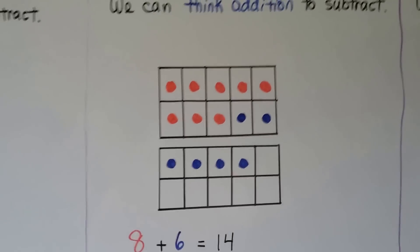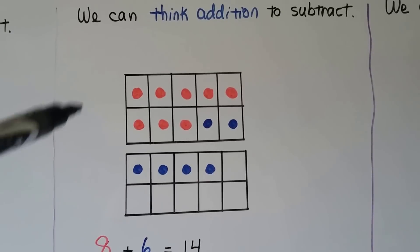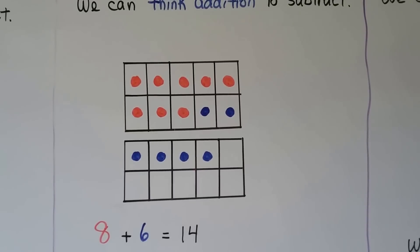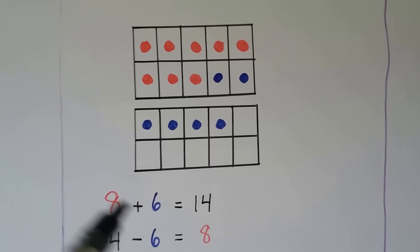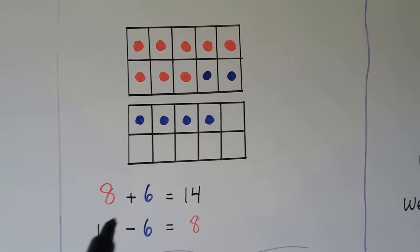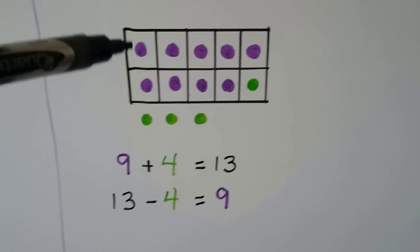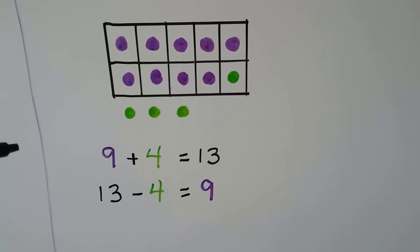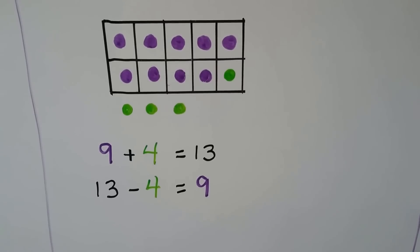And we can think addition to subtract. Here we have a 10 frame that's full — 10, eleven, twelve, thirteen, fourteen. We have 8 red counters and 6 blue counters, making 14 in all. To subtract: 14 counters minus the 6 blue ones equals 8. How they're related facts — the sum in the addition sentence is the minuend in the subtraction sentence. Here we have 9 purple counters and 4 green counters — thirteen in all. We can write: 13 minus the 4 green ones equals the 9 purple ones.